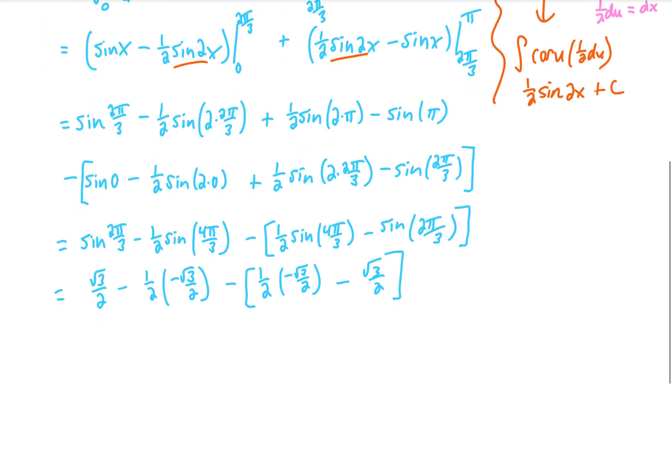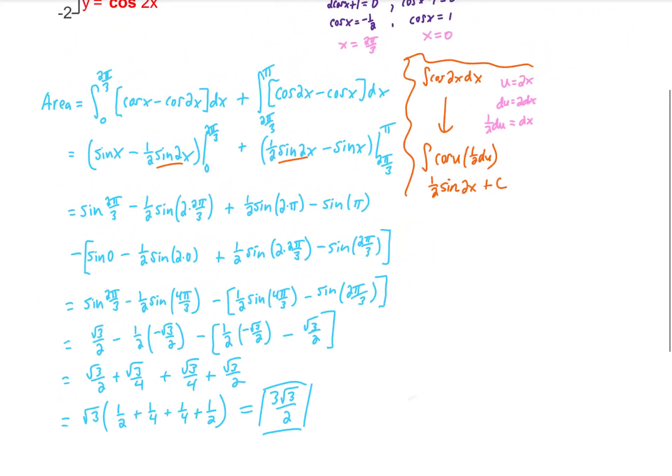I need just a little bit more space to finish this problem. Simplifying gives us this right here. Notice that everything has a square root of 3 on it. So if you want to, you can think of this as the square root of 3 times the quantity 1 half plus 1 fourth plus 1 fourth plus 1 half. All of that adds up to 3 halves. So our final answer is going to be 3 square root of 3 over 2. That's an area, so that's going to be measured in square units.